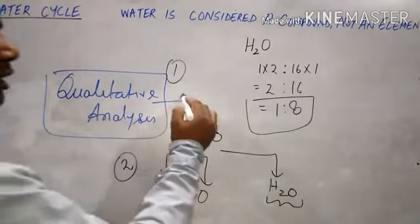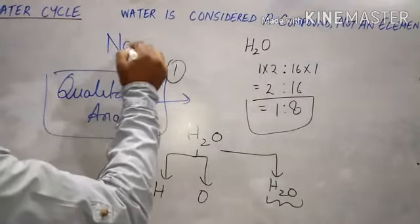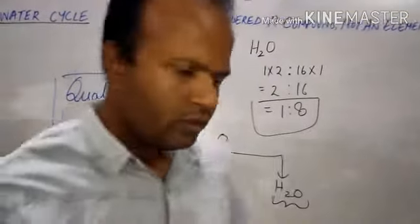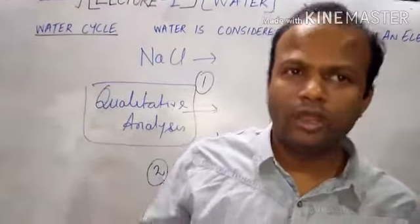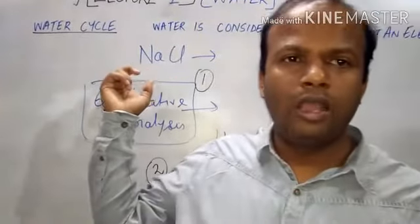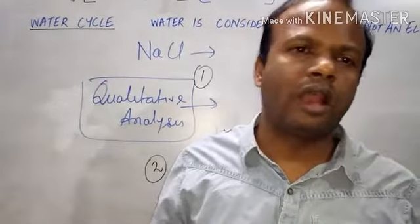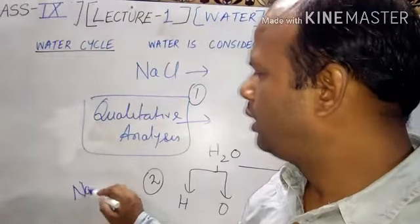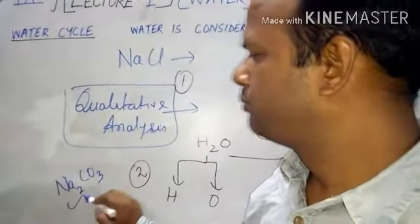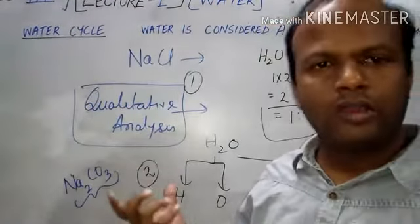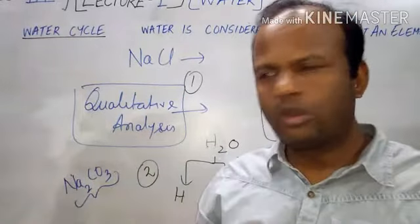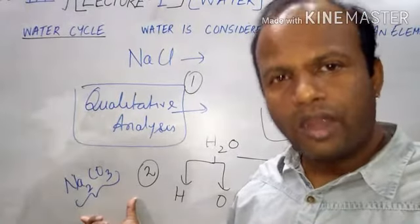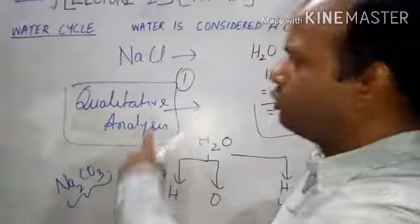Qualitative analysis means: suppose we have an unidentified substance — a salt — and we have to identify it, to recognize which ions it is made up of: what is the cation and what is the anion. For example, we are given a salt of sodium and we must find out from which cation and from which anion it is made. This process of identifying the cation and anion of an unknown substance is called qualitative analysis.